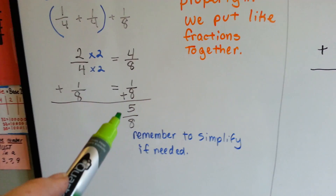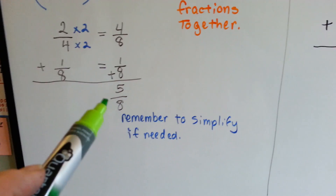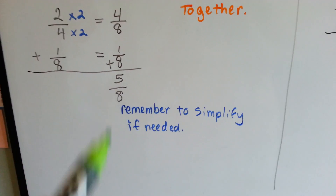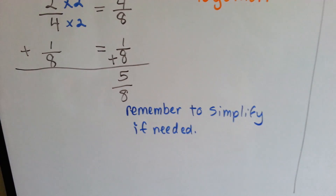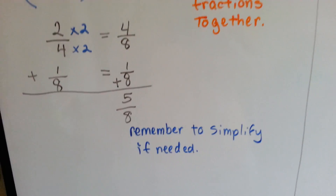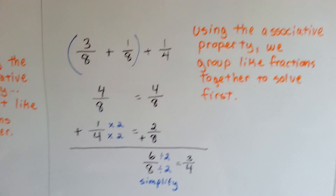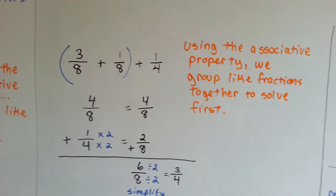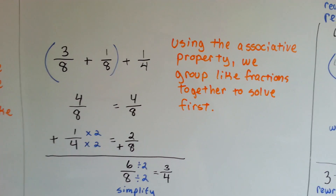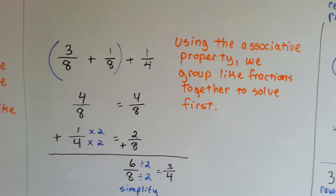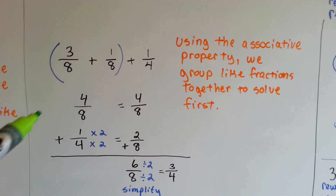Now we don't have to this time, but if you have to, remember to simplify if needed. We can use the associative property to group like fractions together to solve first.